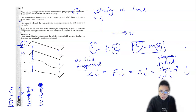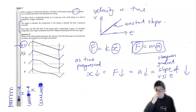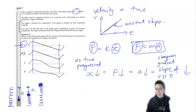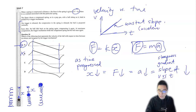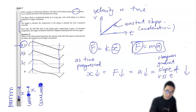Why are C and D not the answer? Because the beginning of those curves is linear, meaning a constant slope. The steepness is constant — it doesn't get steeper and it doesn't get shallower. This suggests constant acceleration over time, and that is not right. We're looking for a scenario where the acceleration or slope is decreasing, not constant. So that's why C and D are incorrect.